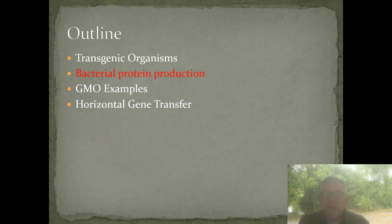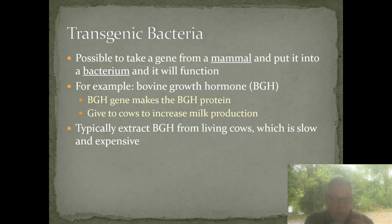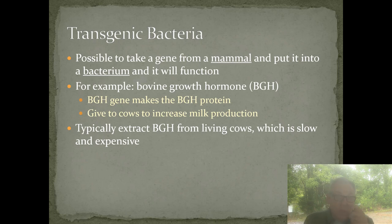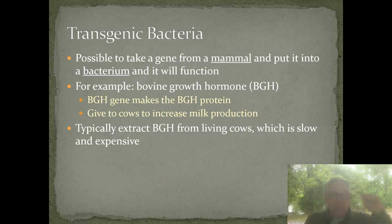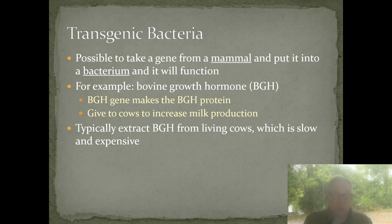The first example is a common one - transgenic bacteria. You put a gene from one species into a bacterium and let the bacterium transcribe and translate that gene. For example, you could take a gene from a mammal and put it in a bacterium and it will function. It's hard to find two organisms that are more different - you're talking about putting a eukaryotic gene into a prokaryotic organism, and it still works. That's pretty cool.